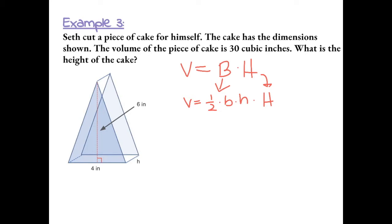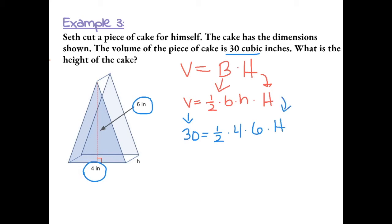Let's fill in any given information. The volume is 30, so we replace V with 30, equal to one-half times the base of the triangle, which is 4, times the height of the triangle, which is 6. The only missing piece is the height of the prism, H. Simplifying: one-half times 4 gives us 2, and 2 times 6 gives us 12. So we have 12H equals 30.